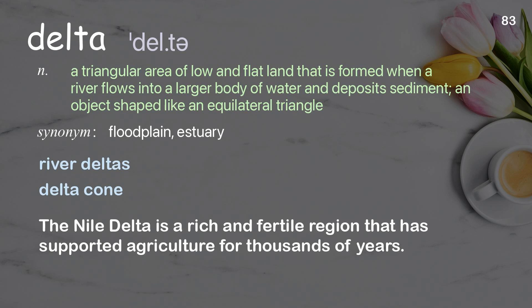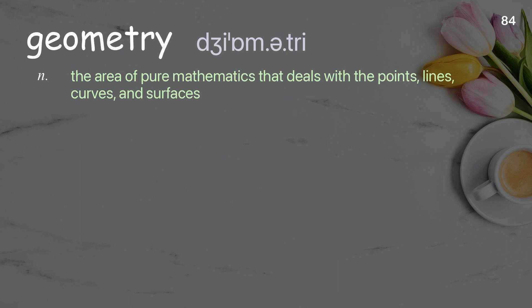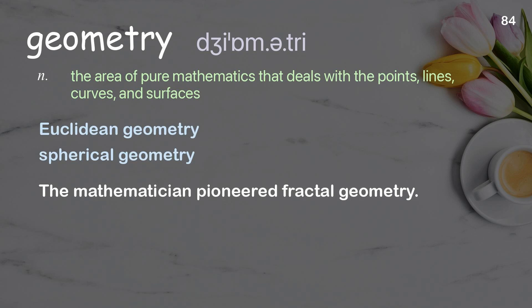Geometry: the area of pure mathematics that deals with the points, lines, curves, and surfaces. Examples: Euclidean geometry, spherical geometry. The mathematician pioneered fractal geometry.